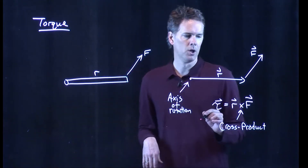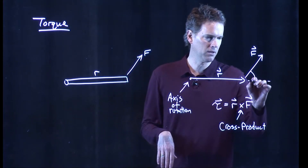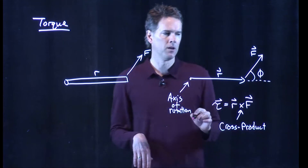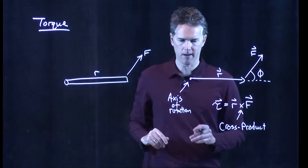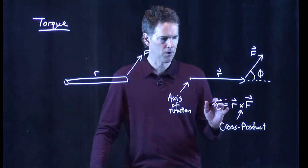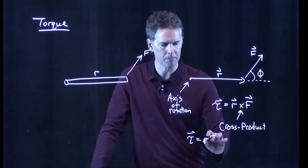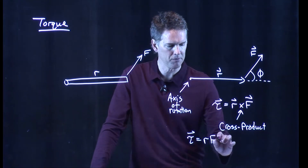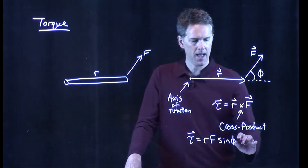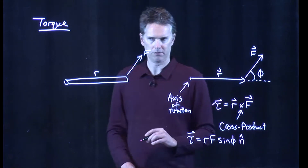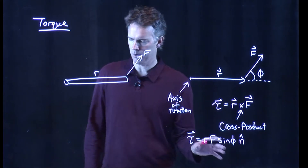To define the cross product, we need to define something else in this picture. Let's call it this angle right here, phi, which is the angle between the line of R and the line of F. And if we do that, then this cross product becomes the following: it's the magnitude of R times the magnitude of F times the sine of the angle between them. And then there is a direction associated with it. This is the definition of the cross product.